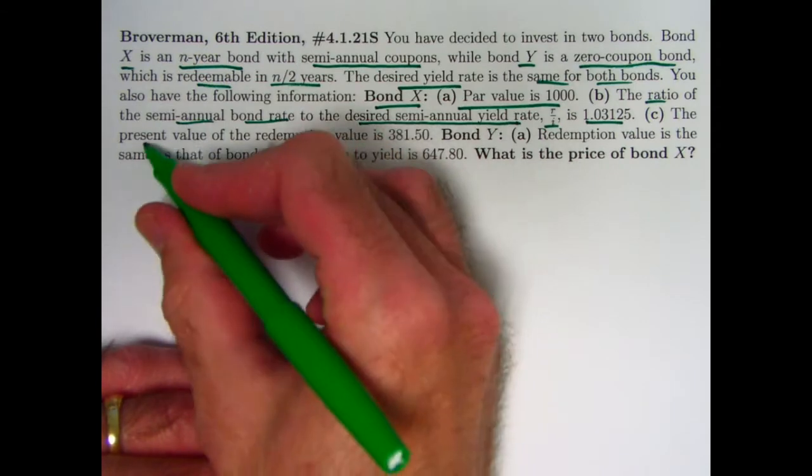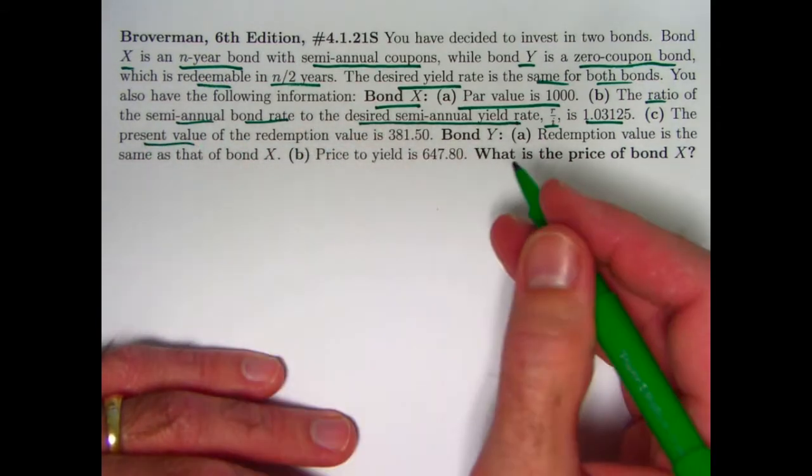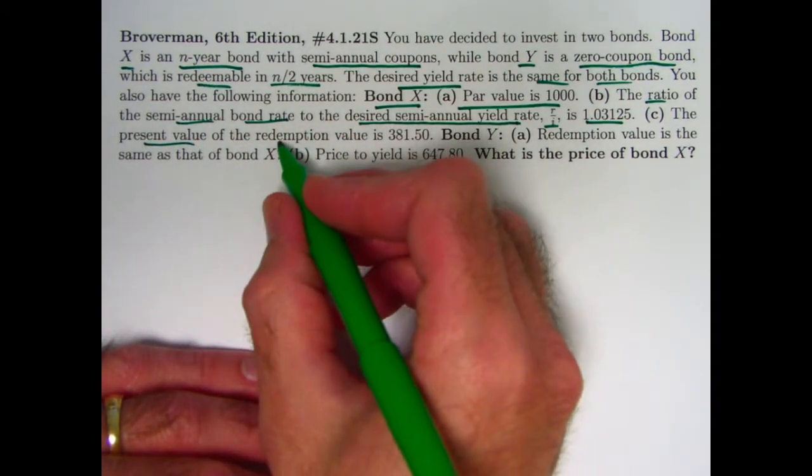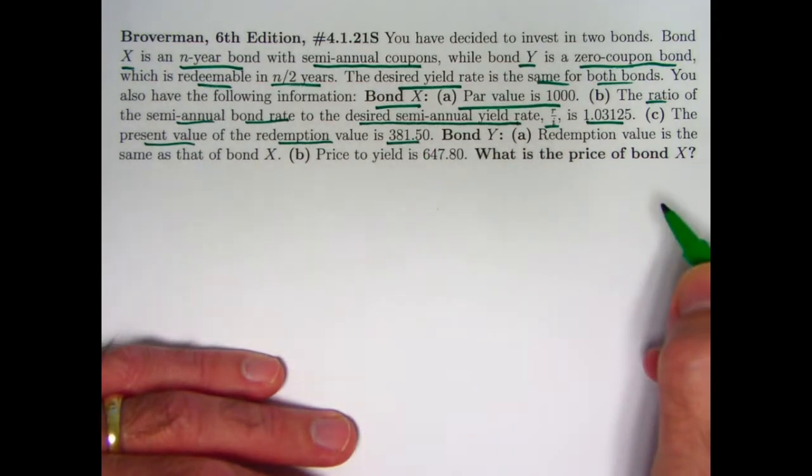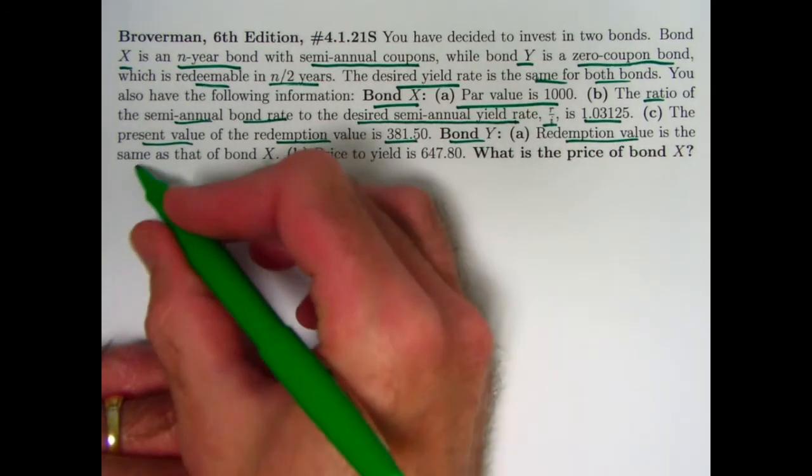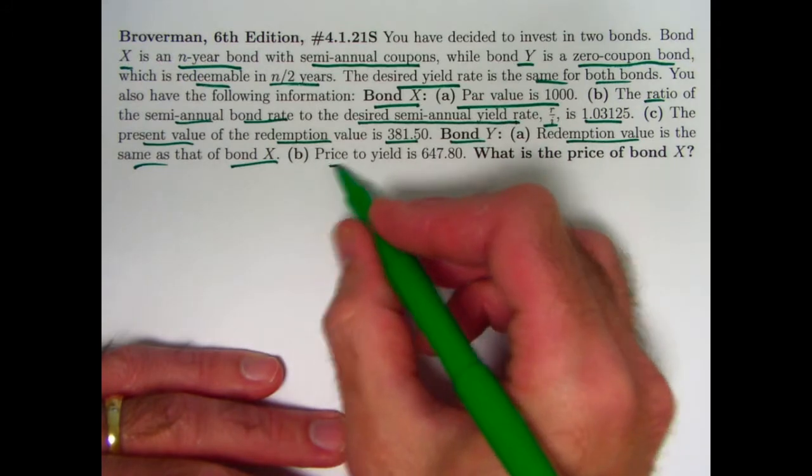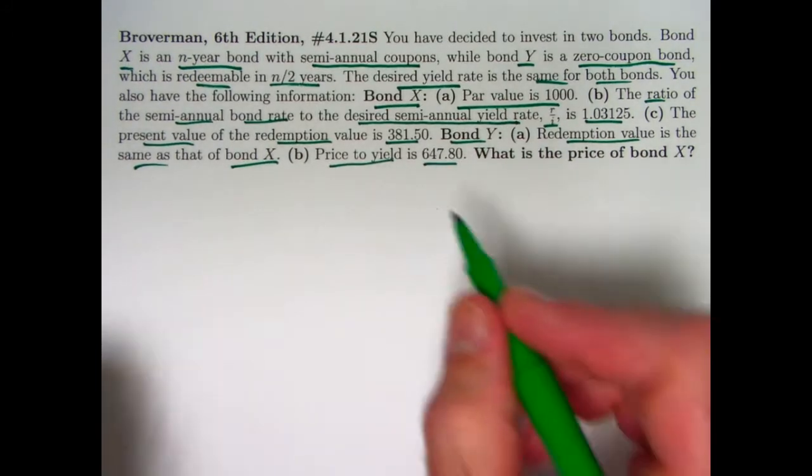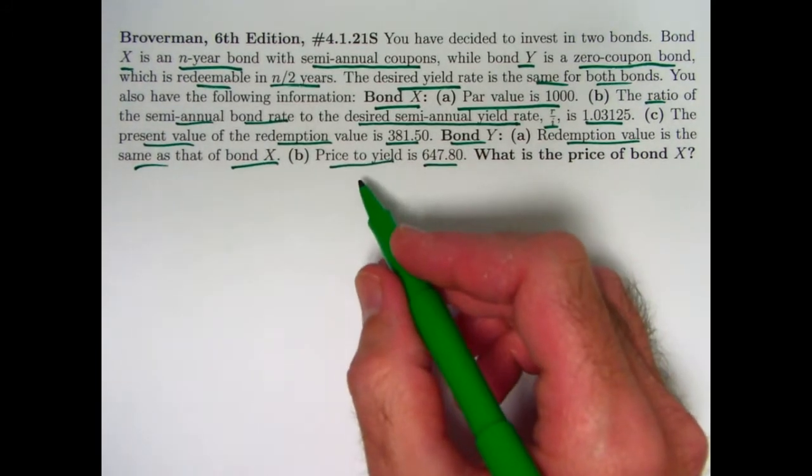For the present value not of the entire income stream, just the redemption value is 381.5. For bond Y, the redemption value is the same as bond X. The price to yield is 647.8. When I first saw this phrase here, price to yield, my initial reaction was to think that was price divided by yield.